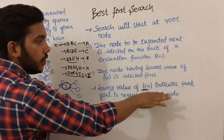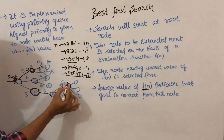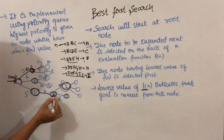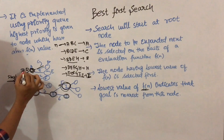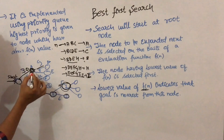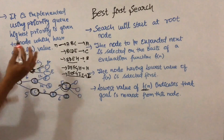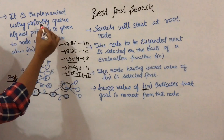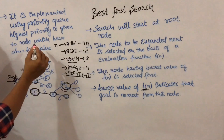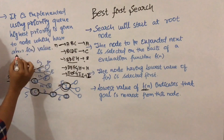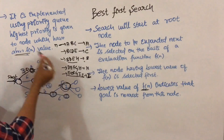Best first search believes that the lowest value of f(n) means the goal node is nearer. So it will not search through every path in order — it will directly choose the node with the lowest f(n), believing the solution is nearer from that node. Best first search is implemented using a priority queue, where priority is given to the node with the lowest value of f(n).